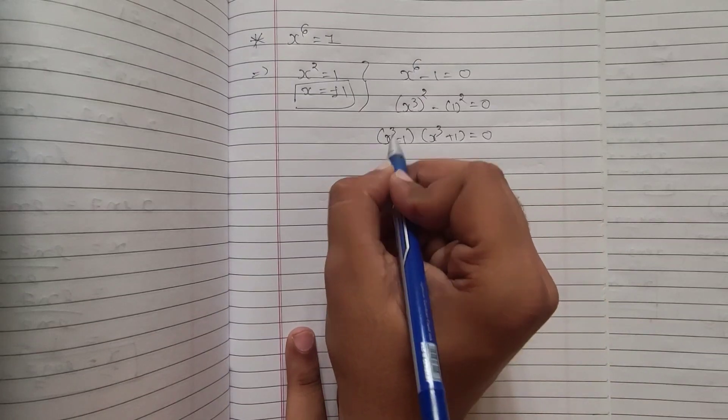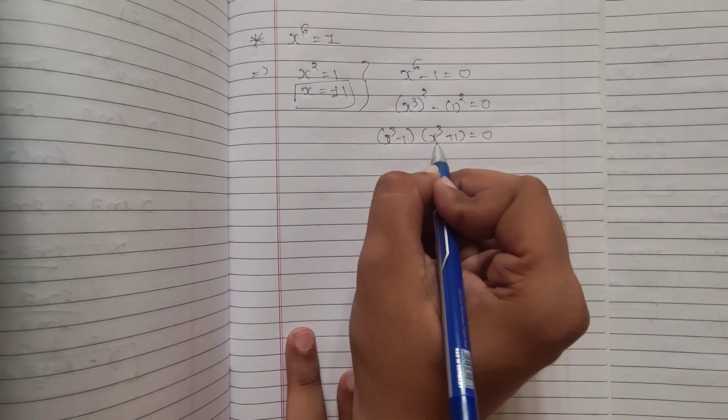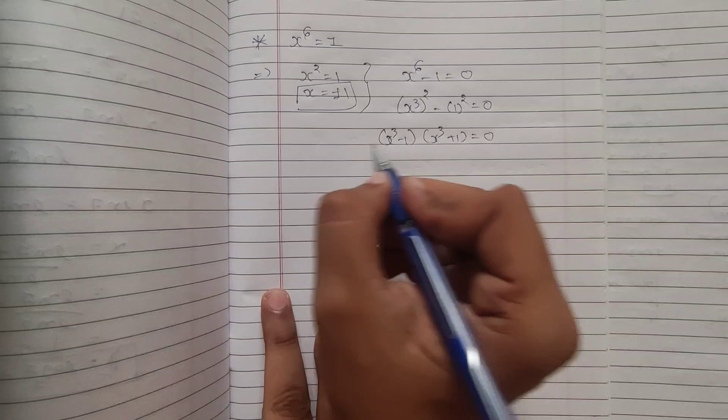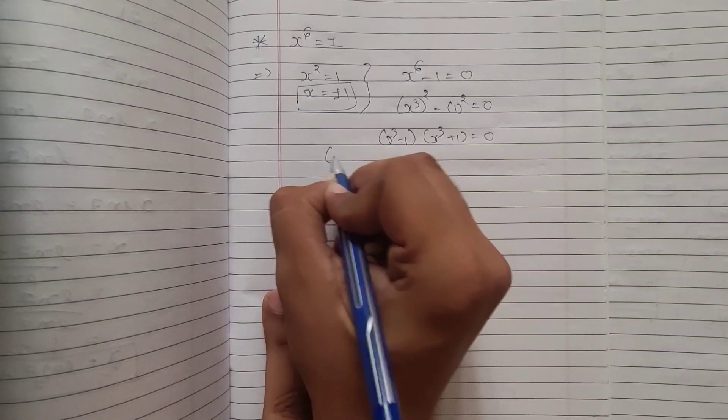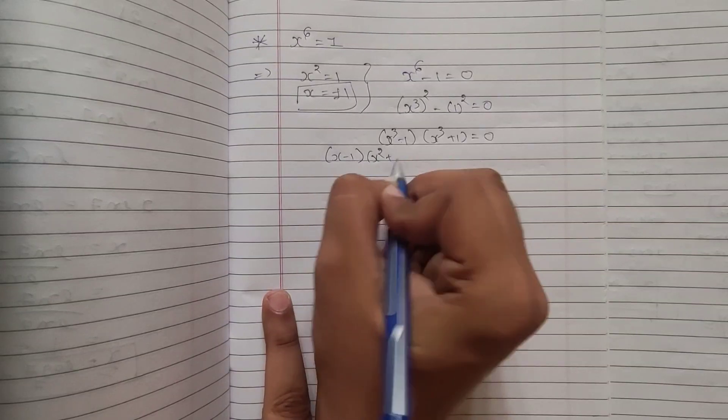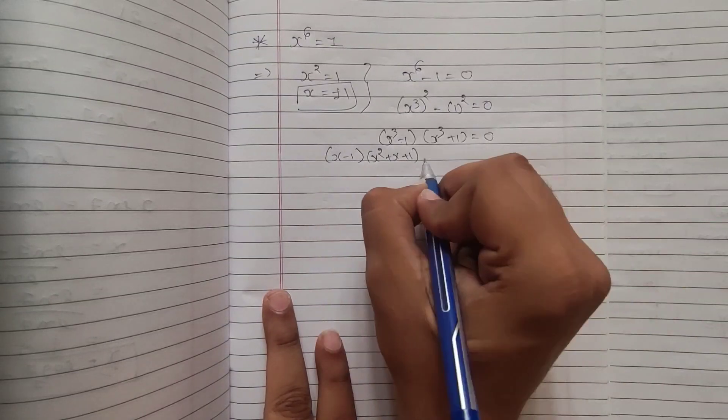Now, I am sure all of you know the formula of a cube minus b cube and a cube plus b cube, right. I do not need to write down. So, I can directly write the formula here. x cube minus 1, I can write it as x minus 1 into x squared plus x plus 1. Agree?